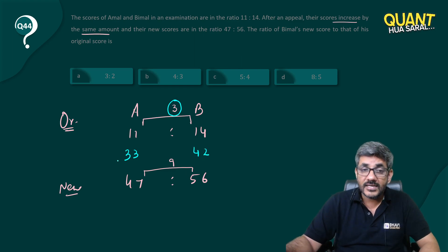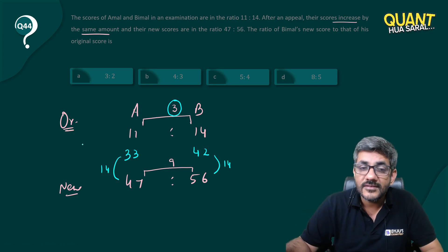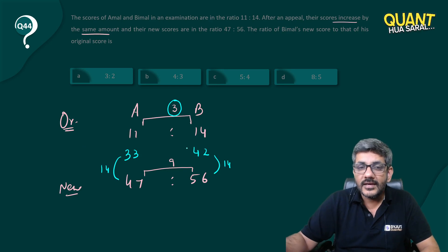So I can say now that if his score is increased by 14, his score is increased by 14, they become in a ratio of 47 and 56. Yes, it satisfies. What is the question asking you? Ratio of Bimal's new score which is 56 to Bimal's original score which is 42.